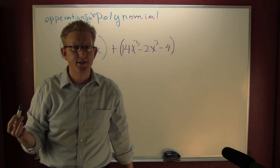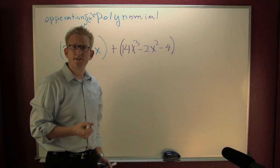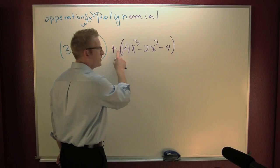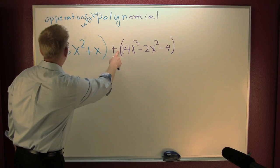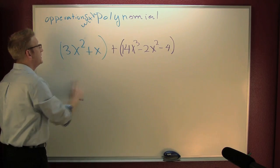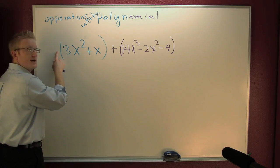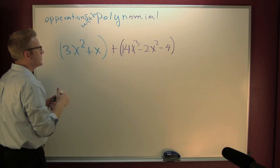Are those parentheses necessary? How can you tell whether or not parentheses are necessary? If there's a number outside or a minus sign outside, then you need them. There is no number or minus sign on the outside of these, so I can get rid of them.